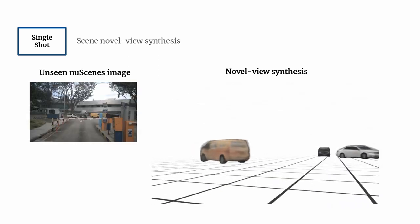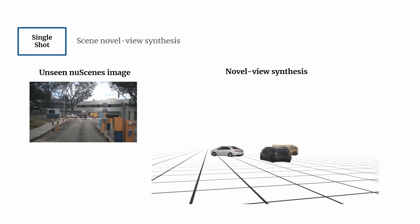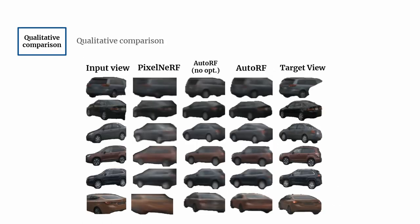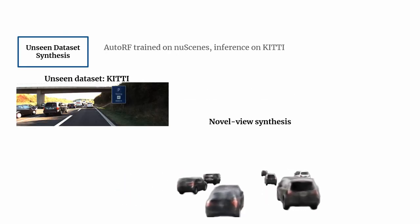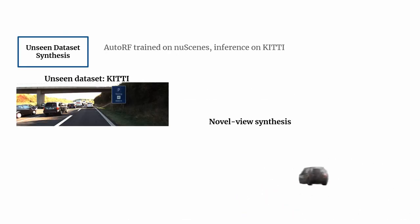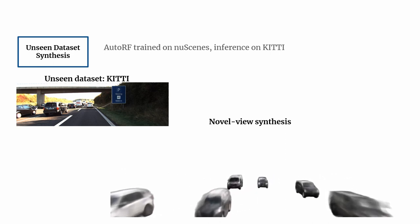We show quantitatively and qualitatively that AutoRF outperforms state-of-the-art, and by test time optimization is able to model additional object detail. While trained on new scenes, AutoRF learns strong implicit priors that enable synthesis on new datasets like KITTI that highly differ in camera and scene settings.